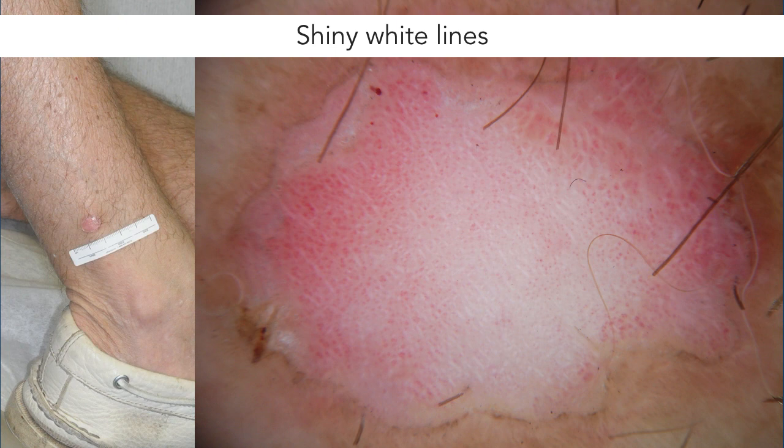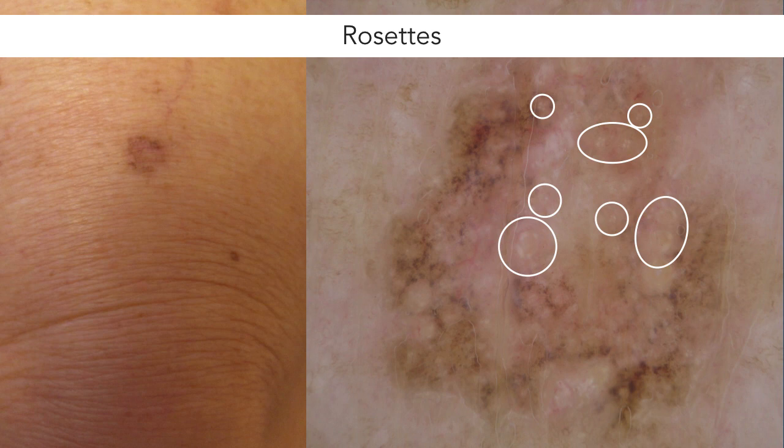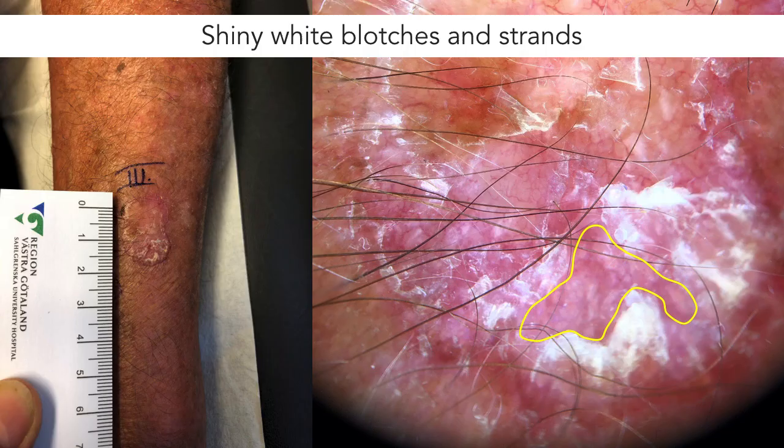This is a beautiful solitary porokeratosis lesion with several interesting features. We see a pigmented keratin rim and widespread dotted vessels, but there are also abundant shiny white lines intermixed with the dotted vessels. In this pigmented porokeratosis, we can find a few rosettes of varying size within the central area, highlighted with white circles. In this rather large porokeratosis, we see lots of features including shiny white blotches and strands within the yellow demarcation.